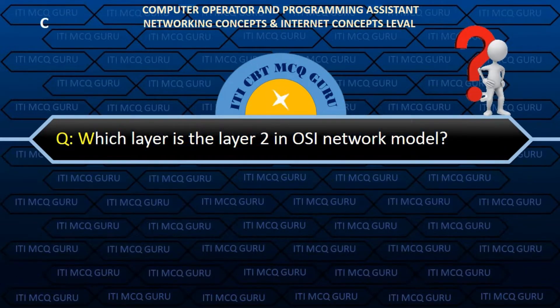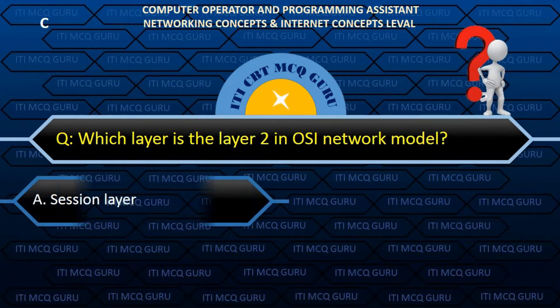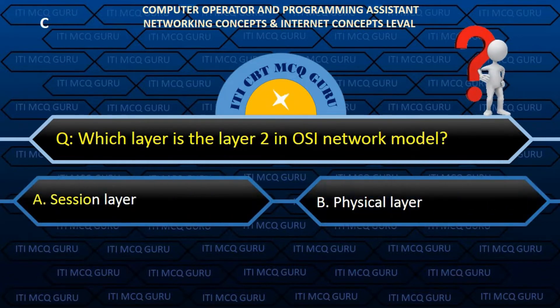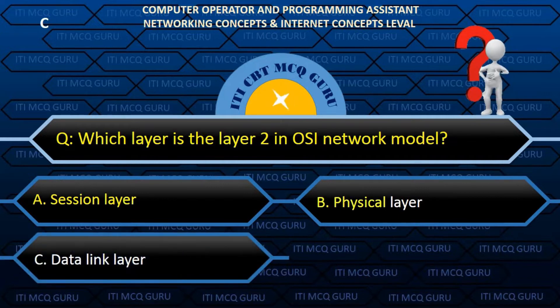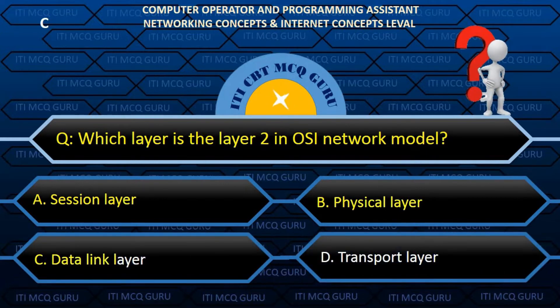Which layer is layer 2 in the OSI network model? C. Data link layer.